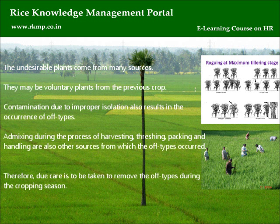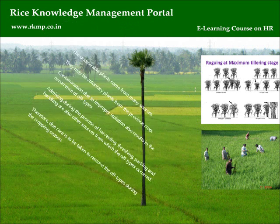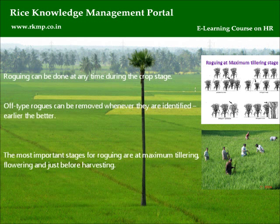Admixing during the processes of harvesting, threshing, packing, and handling are also sources from which off-types occur. Therefore, due care is to be taken to remove the off-types during the cropping season. Roguing can be done at any time during the crop stage; off-type rogues can be removed whenever they are identified — the earlier the better. The most important stages for roguing are at maximum tillering, flowering, and just before harvesting.